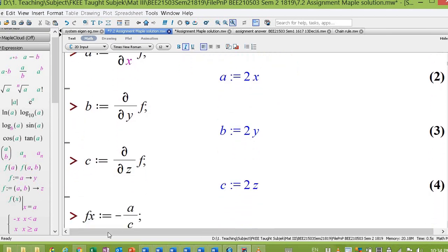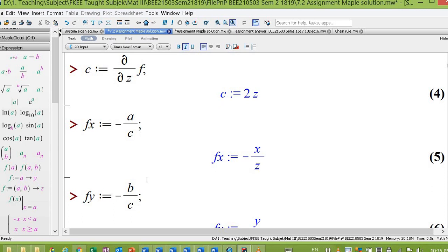Hence, your ∂z/∂x will be -a/c. Your ∂z/∂y will be -b/c. Okay, with this, thank you for your attention.